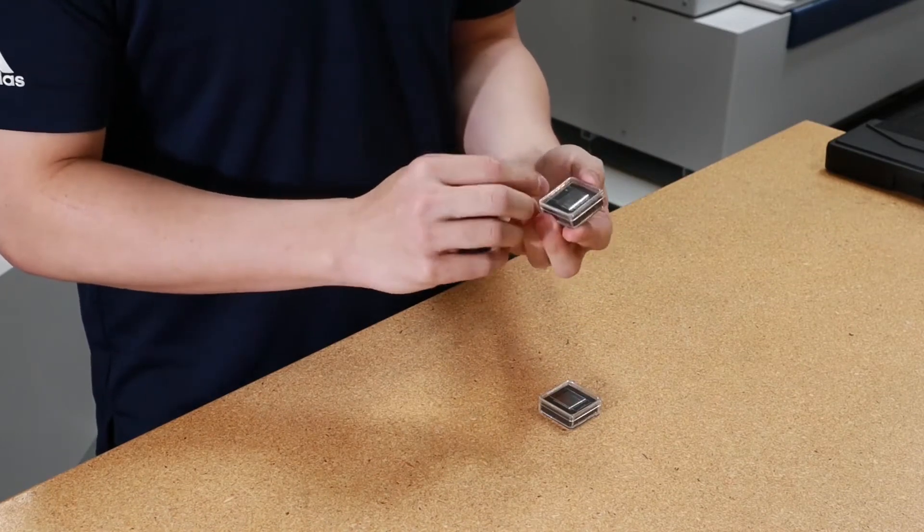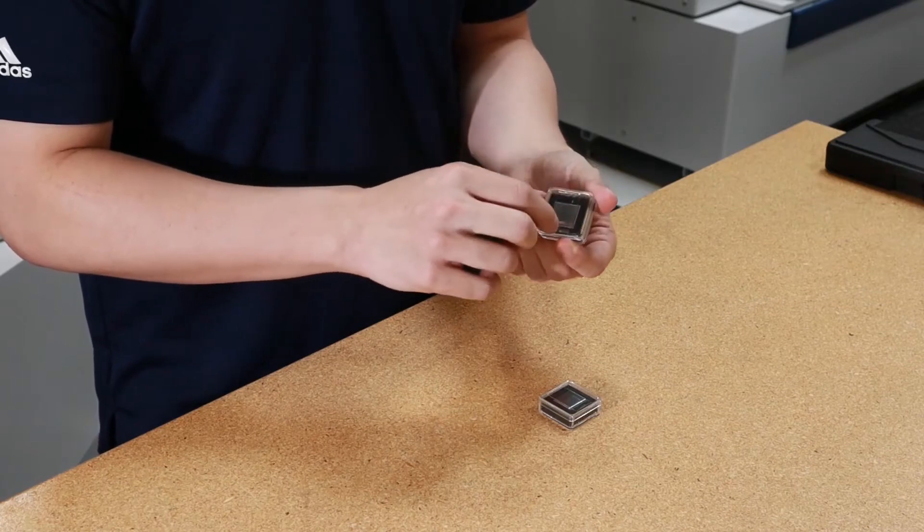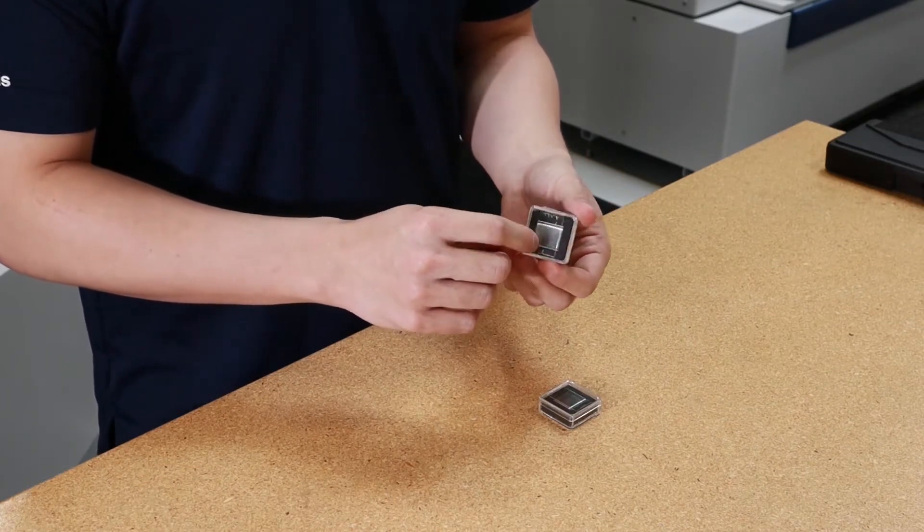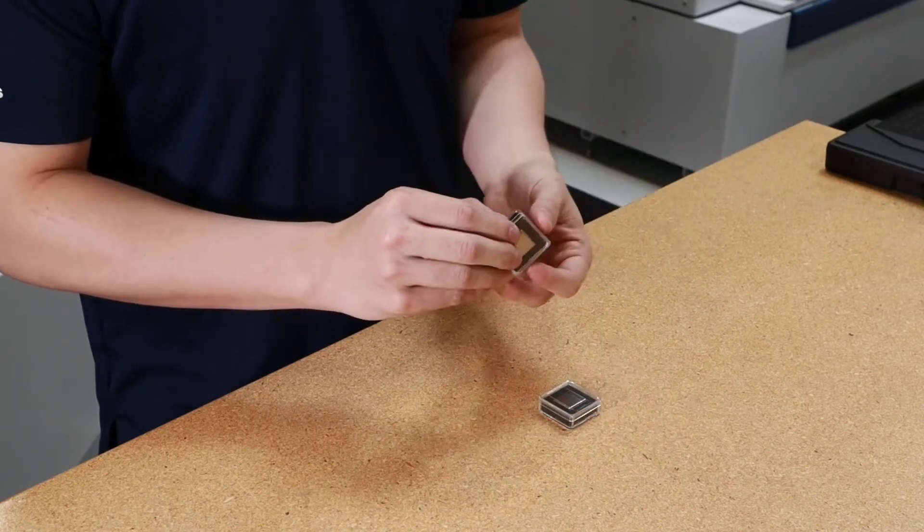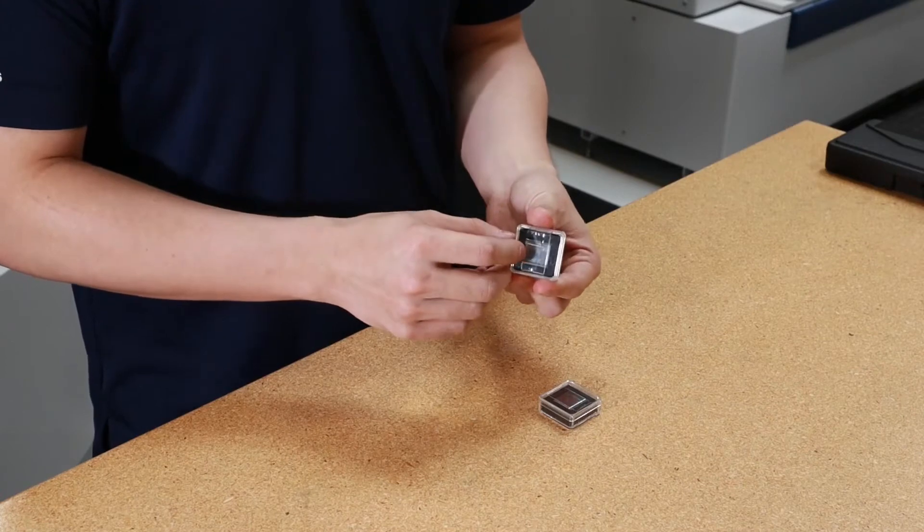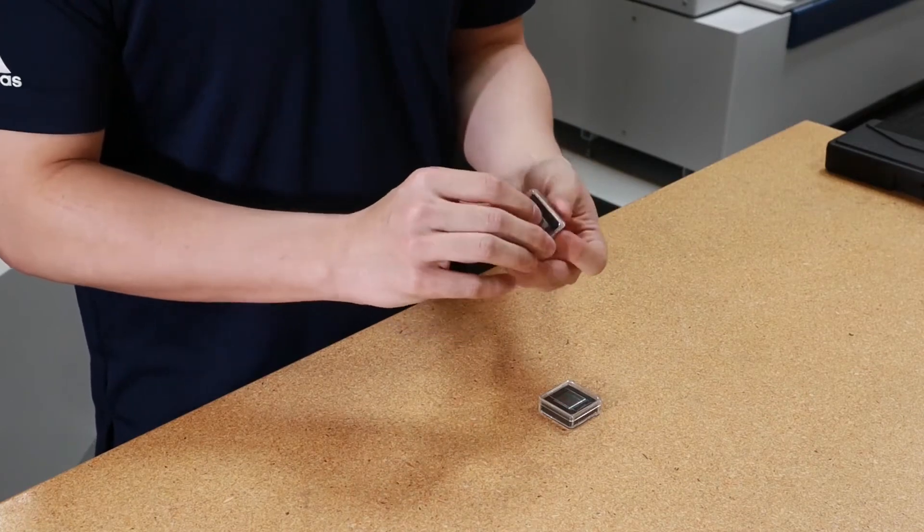Over time, a groove or indentation begins to appear on the carbide contact, and the control will let you know within about 60 to 80 hours that it's time to either change or index your carbide contact.